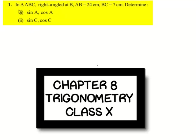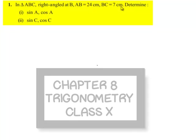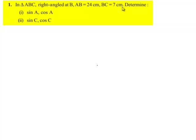Moving on to the first sum. In triangle ABC, right angle at B, AB is equal to 24 cm, BC is equal to 7 cm. Determine sin A, cos A, sin C, cos C.